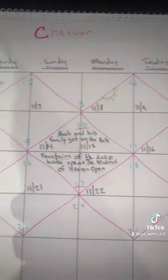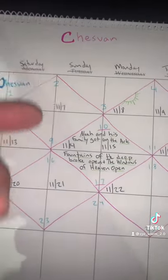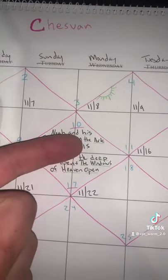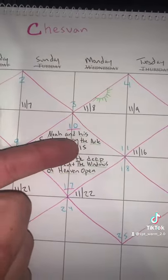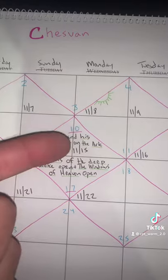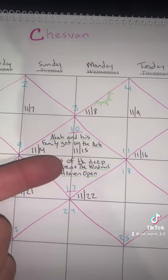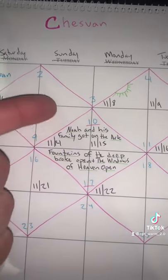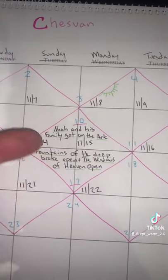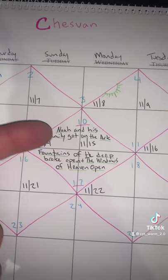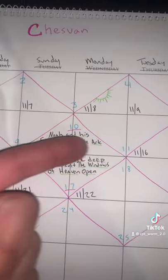And then as far as Heshvan 10 being the day that Noah and his family got on the ark, Heshvan 10 will be the 14th and the 15th.